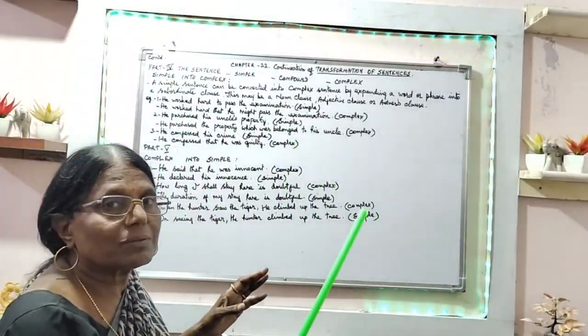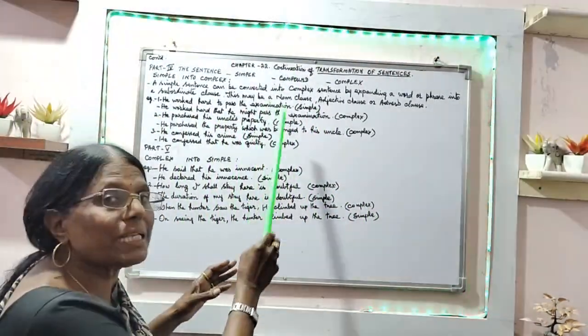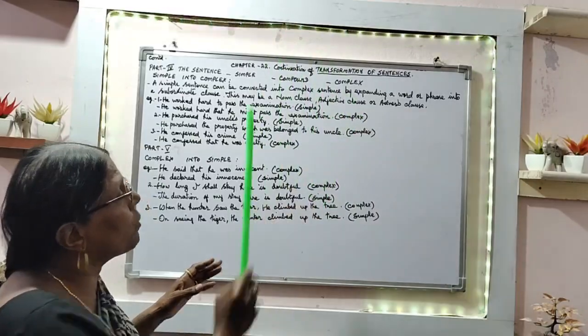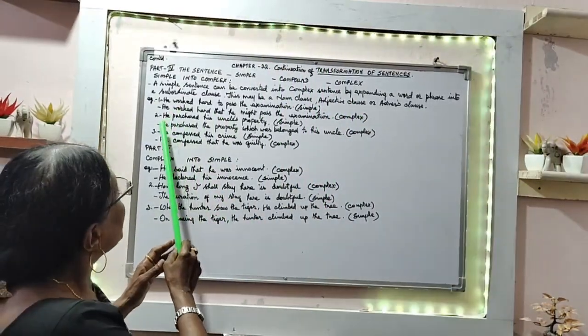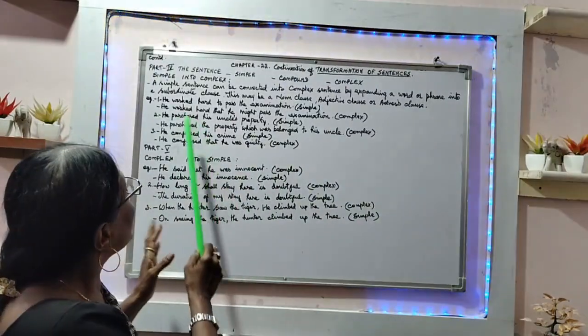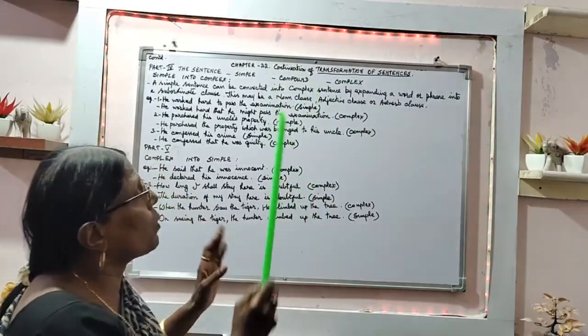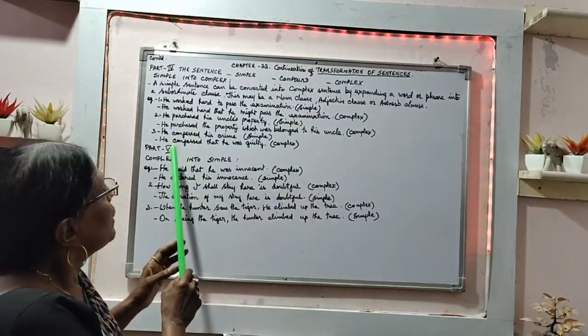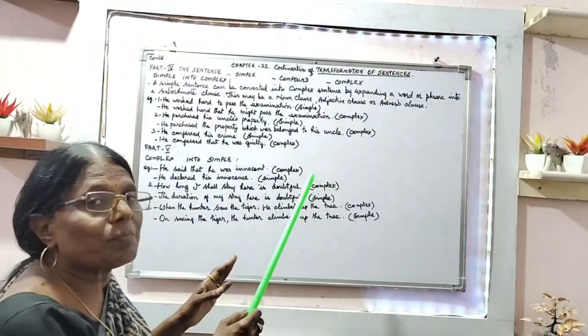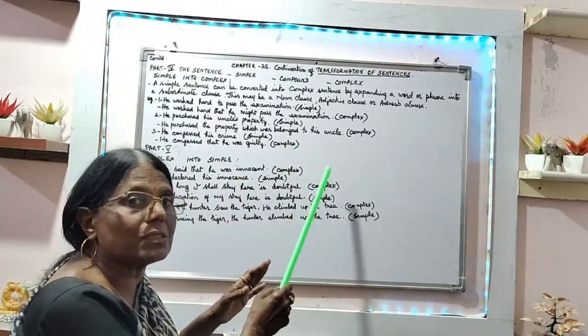Examples: 'He worked hard to pass the examination' is simple. 'He worked hard that he might pass the examination' is complex. 'He purchased his uncle's property' is simple. 'He purchased the property which belonged to his uncle' is complex. 'He confessed his crime' is simple. 'He confessed that he was guilty' is complex.